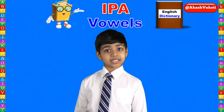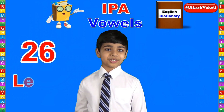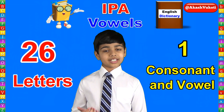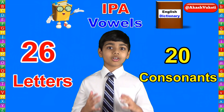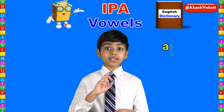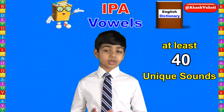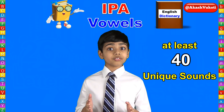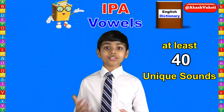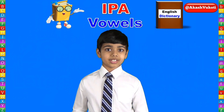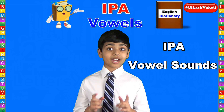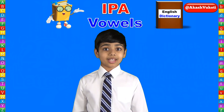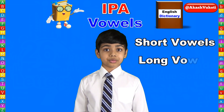Coming back to the IPA — the English alphabet has 26 letters. Five of them are vowels, one is considered both a consonant and a vowel (that is Y), and the remaining 20 are consonants. However, there are at least 40 unique sounds made out of these vowels — both short and long — diphthongs, and consonant sounds. On top of these 40 phonetic sounds, there are a few more used only in British English, and a couple others used only in American English. Now, let's begin by looking into IPA vowel sounds. There are three types of vowel sounds represented by IPA: short vowels, long vowels, and diphthongs.